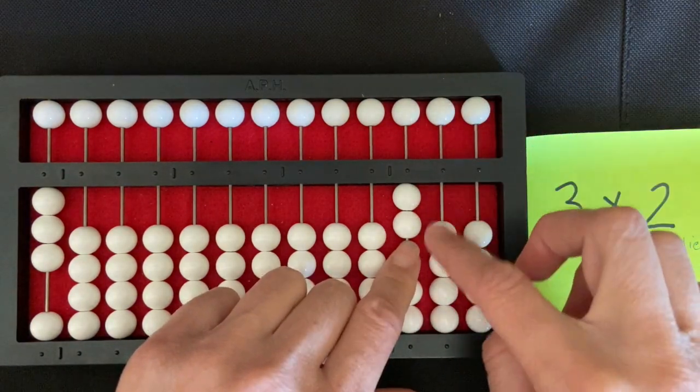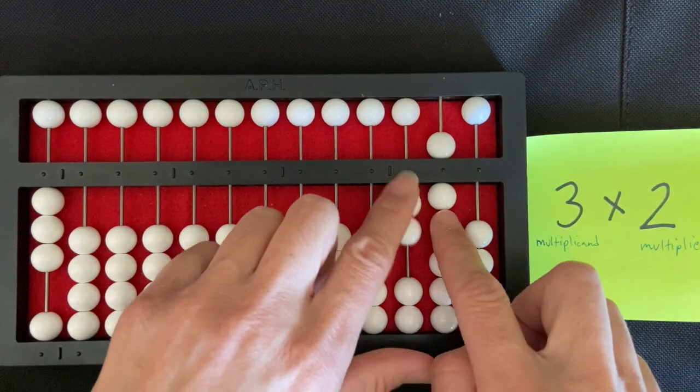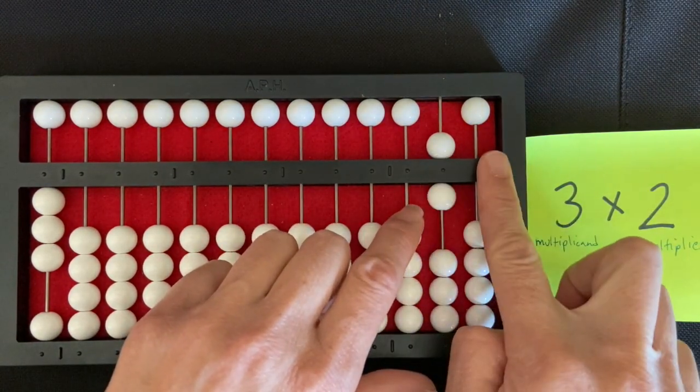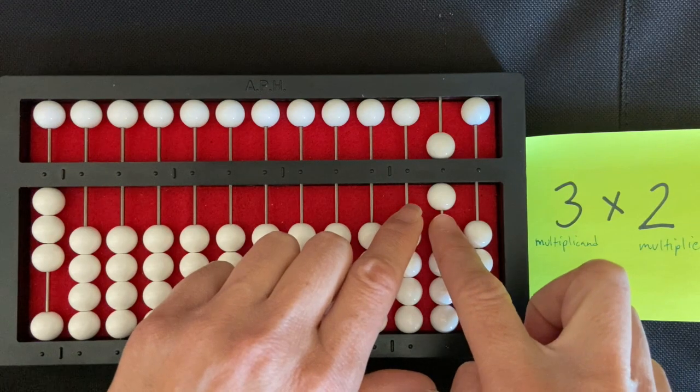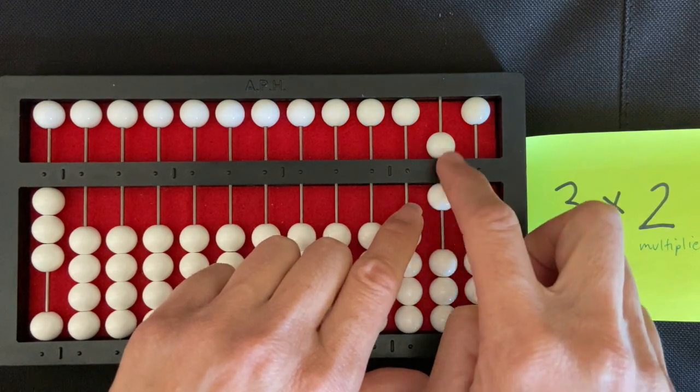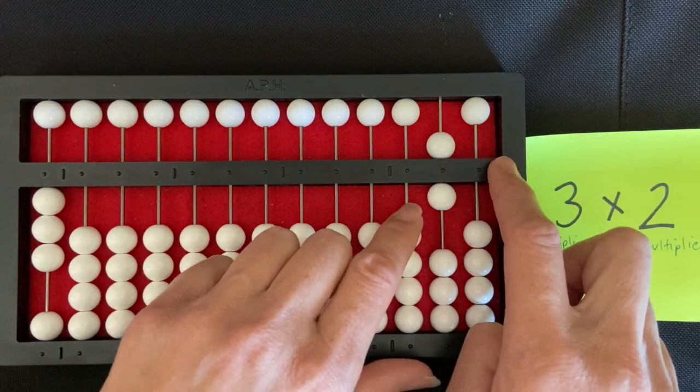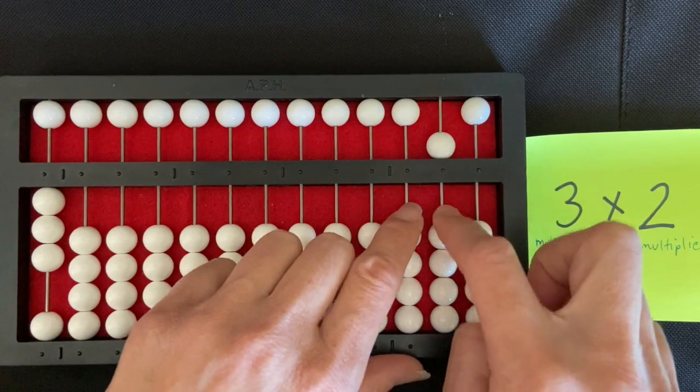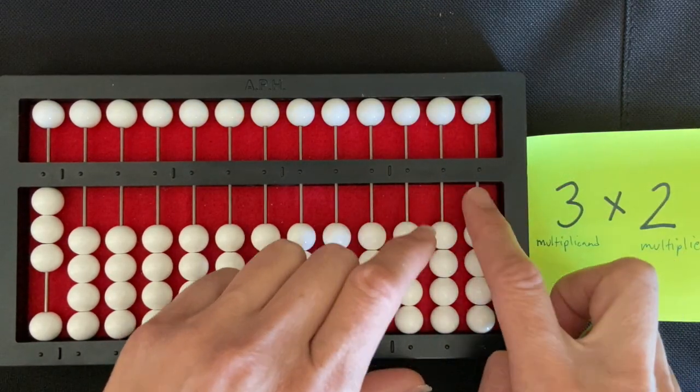So if we set the six in the tens rod and then cleared our multiplier, that would read the answer to be 60 and not six. So that's where the problem comes in. So that's why we need to make sure when we're thinking of it, we say zero, six and set it in the appropriate rod.